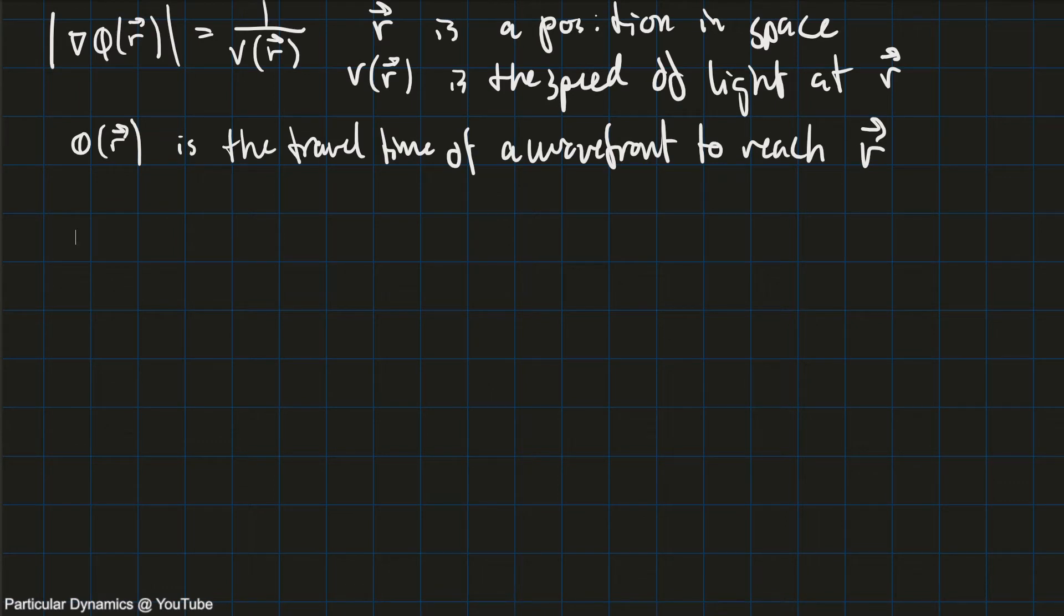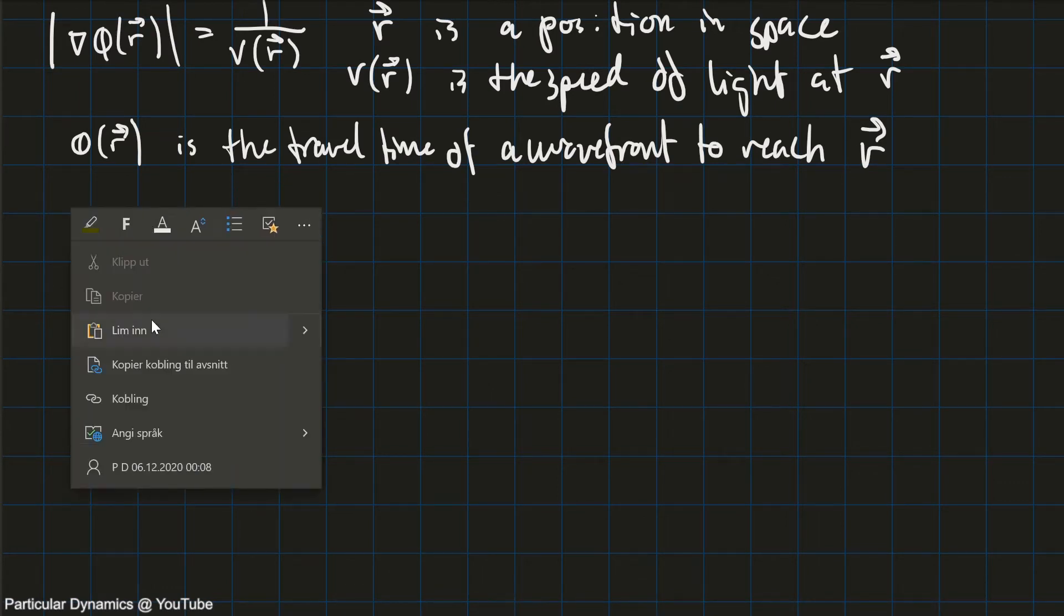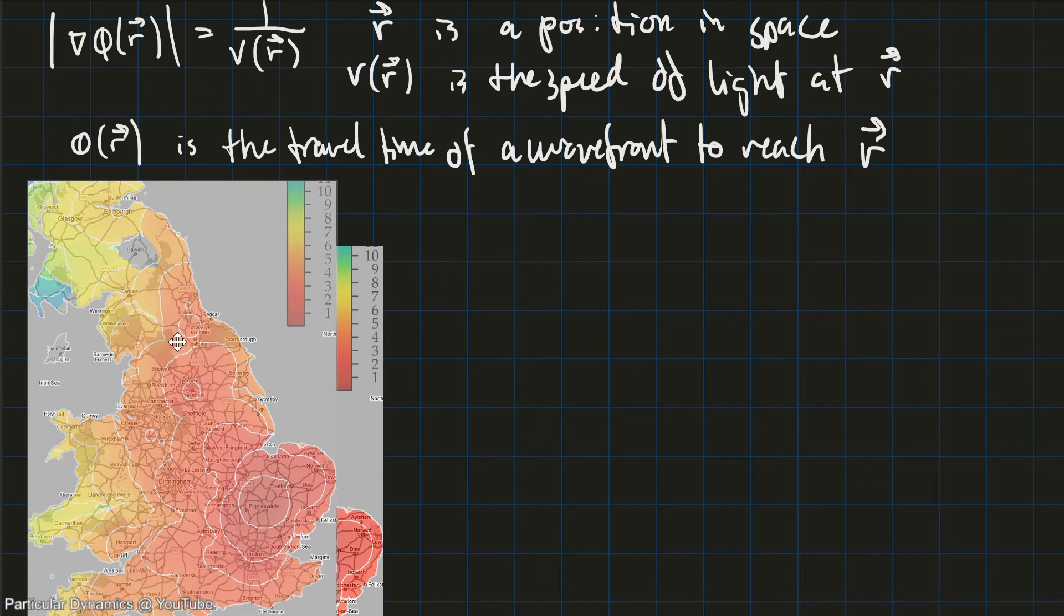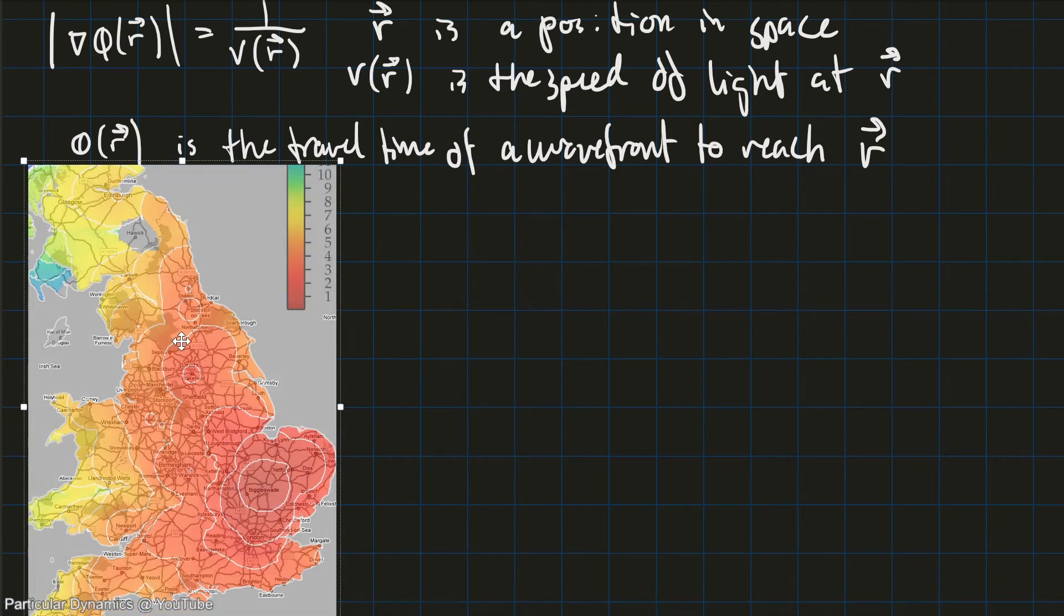I'm going to paste in here a map, a map of Britain. And we're going to look a bit closer at what this map is. So the colors on this map represents the time it takes to travel from Cambridge to any place on the map. In the top right, we have the color scale. It says how many hours.